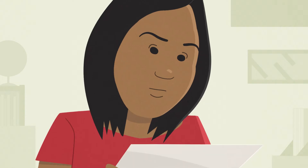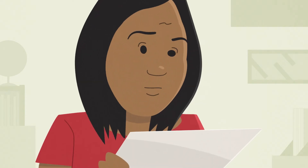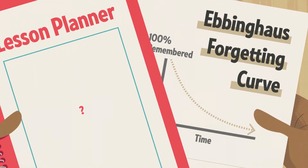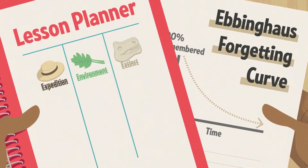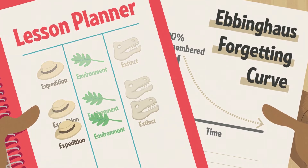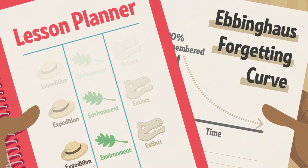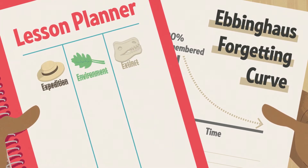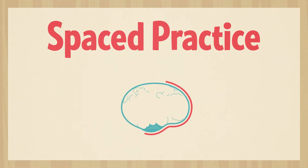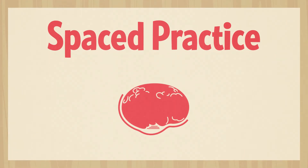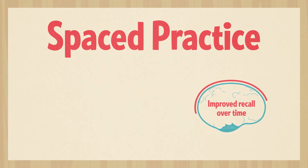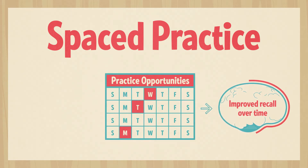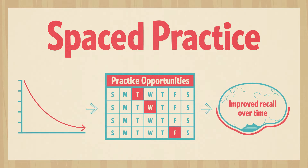As educators, we see Ebbinghaus's research as an opportunity. What if we could use what he learned about memory? What if we could help students strategically review previously learned information just when the brain needs it most? That's where spaced practice comes in. Spaced practice maximizes the brain's ability to recall information by offering practice opportunities based on the Ebbinghaus forgetting curve.